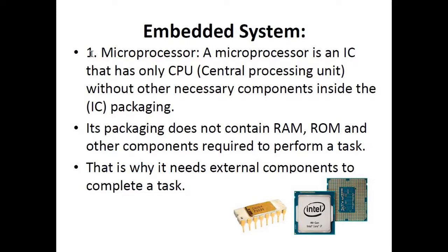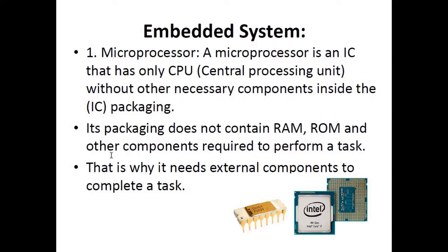Let's discuss them one by one. A microprocessor is an IC, or integrated circuit, that has only a CPU — central processing unit — without other necessary components inside the packaging. This is what a microprocessor looks like inside a computer. This is a fourth-generation Core i7 processor, and as you can see its packaging does not contain RAM, ROM, and other components required to perform a task, which is why it needs external components to complete a task.